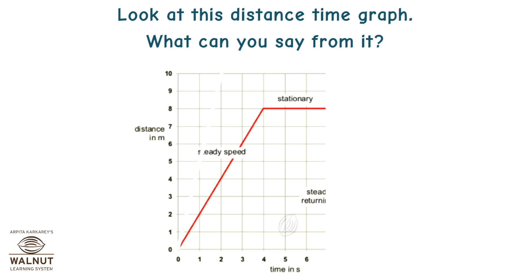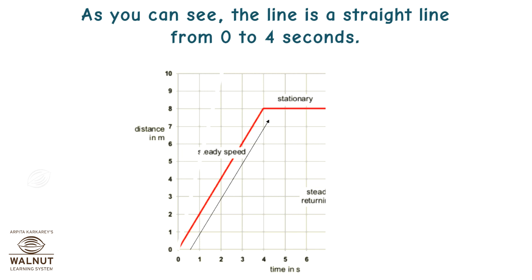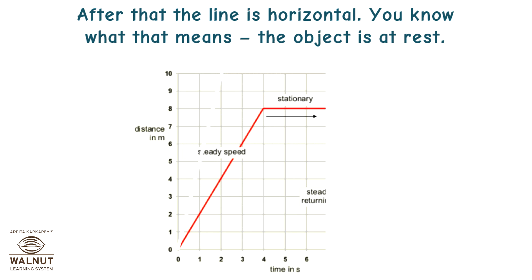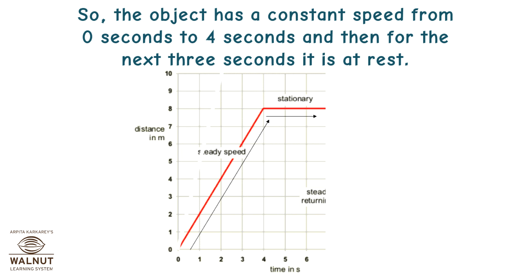Look at this distance-time graph. As you can see, the line is a straight line from 0 to 4 seconds, so you can say it is uniform motion. After that, the line is horizontal — you know what that means: the object is at rest. So the object has a constant speed from 0 to 4 seconds, and then for the next 3 seconds it is at rest.